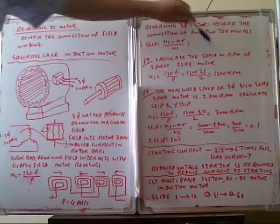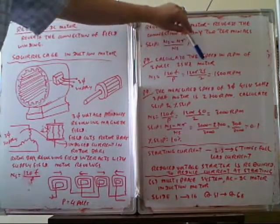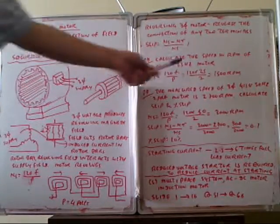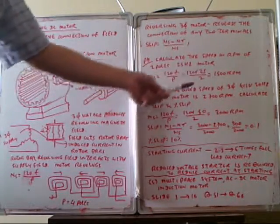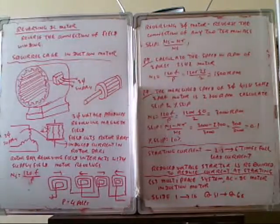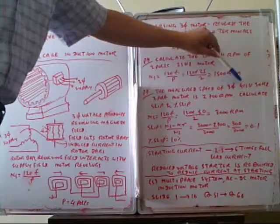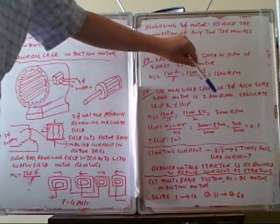We calculate this problem: calculate the speed in RPM of the two-pole three-phase motor. We write down the equation ns is equal to 120 f over p. So 120 multiply frequency 50 divided by 2, so we calculate 3000 RPM.